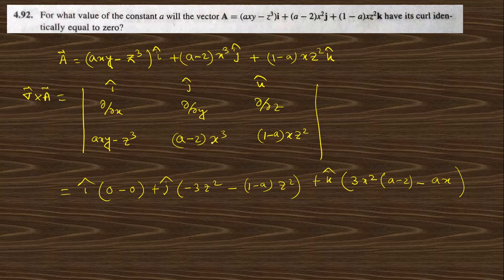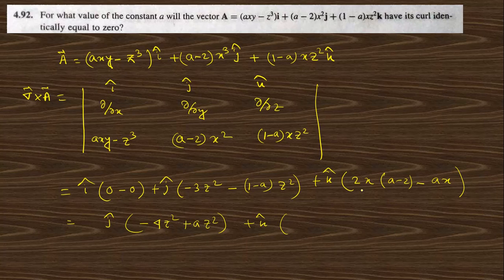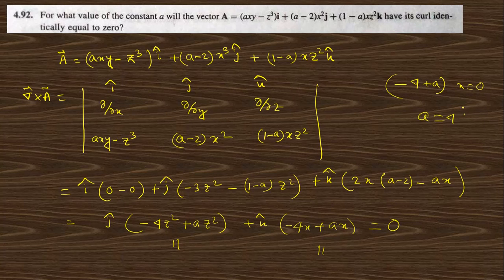Computing the components: the k̂ component gives (a − 2)x − ax, and the ĵ component gives −3z² − (1 − a)z². Setting the k̂ component to zero: (a − 2)x − ax equals zero simplifies to −4 + a = 0, so a = 4. The value of a is 4.